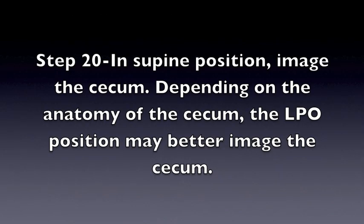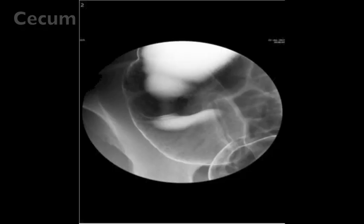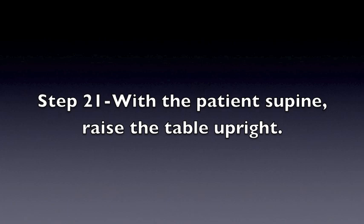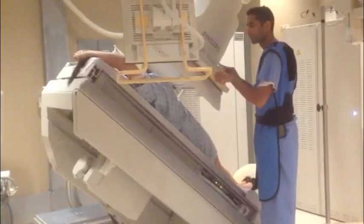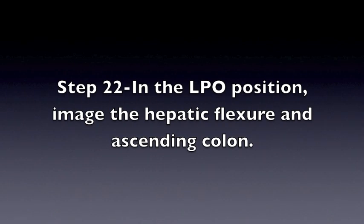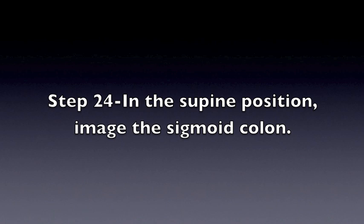Step 20: In the supine position, image the cecum. Depending on the anatomy of the cecum, the LPO position may better image the cecum. Step 21: With the patient supine, raise the table upright. Step 22: In the LPO position, image the hepatic flexure and ascending colon. Step 23: In the RPO position, image the splenic flexure and descending colon. Step 24: In the supine position, image the sigmoid colon.